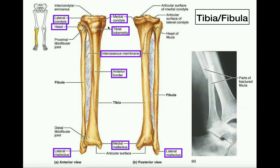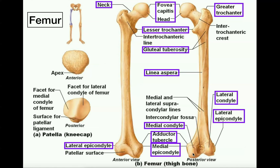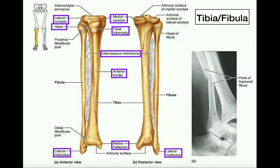First, we will look at the tibia. If we look at the proximal part of the tibia, we'll see two bony prominences at the top. On the medial side we have the medial condyle, and on the lateral side we have the lateral condyle. Looking on top of those — best seen from a superior view in the lab — there are articular surfaces on each that correspond with regions on the femur. The medial condyle of the femur will actually sit right in this articular surface of the medial condyle of the tibia.